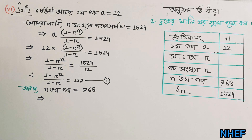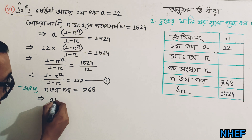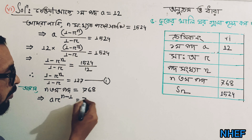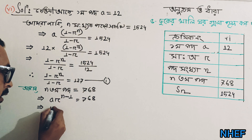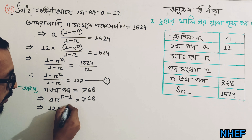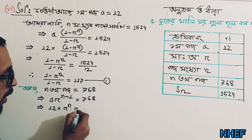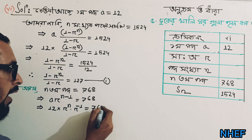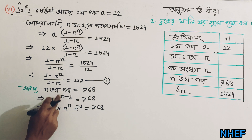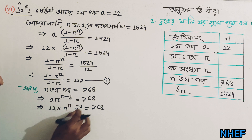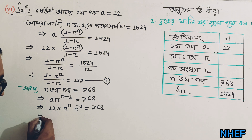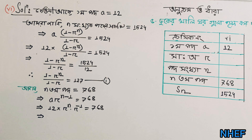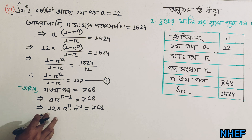So, a times r to the power n minus 1 equals 680. Let's say a times r to the power n equals 680. So, a times r to the power n equals 680 r.